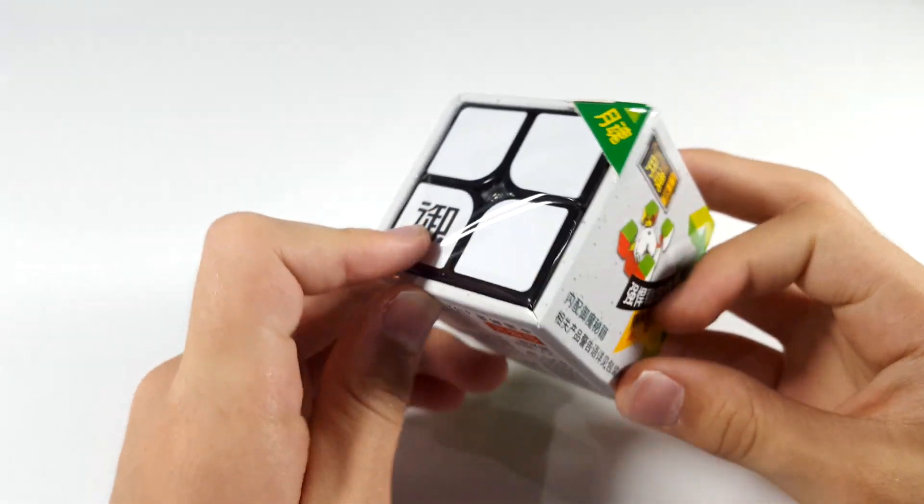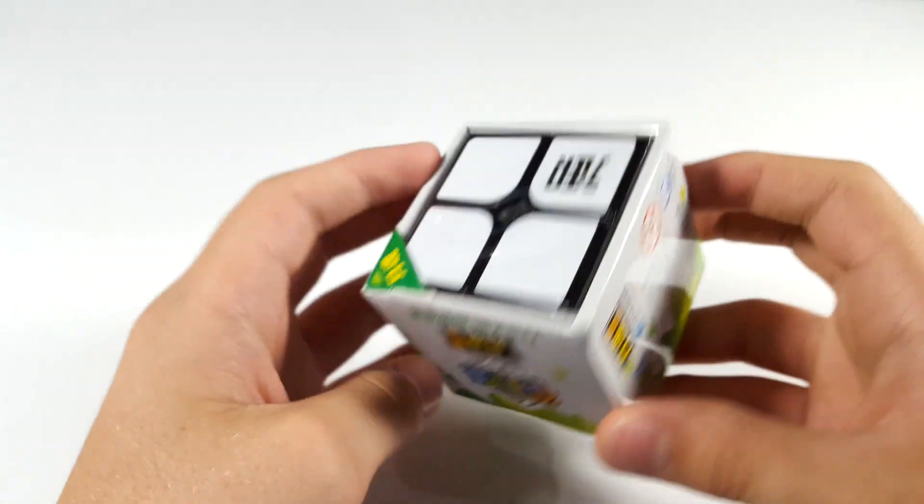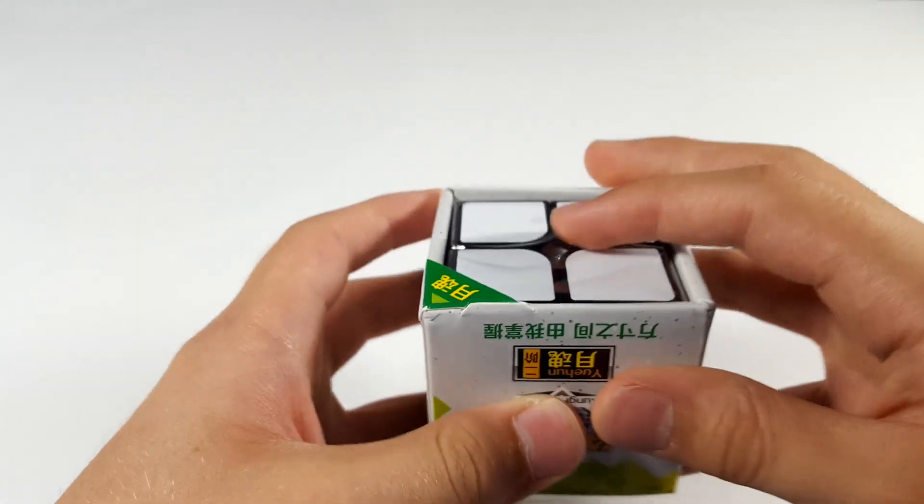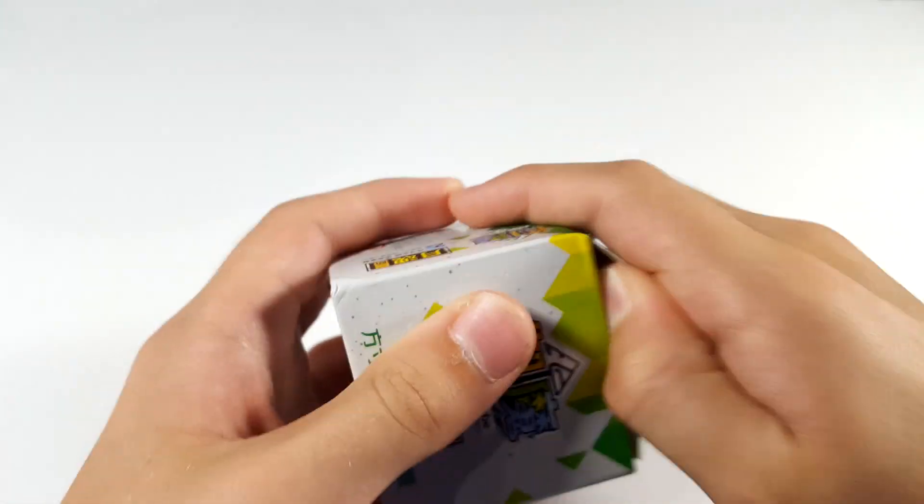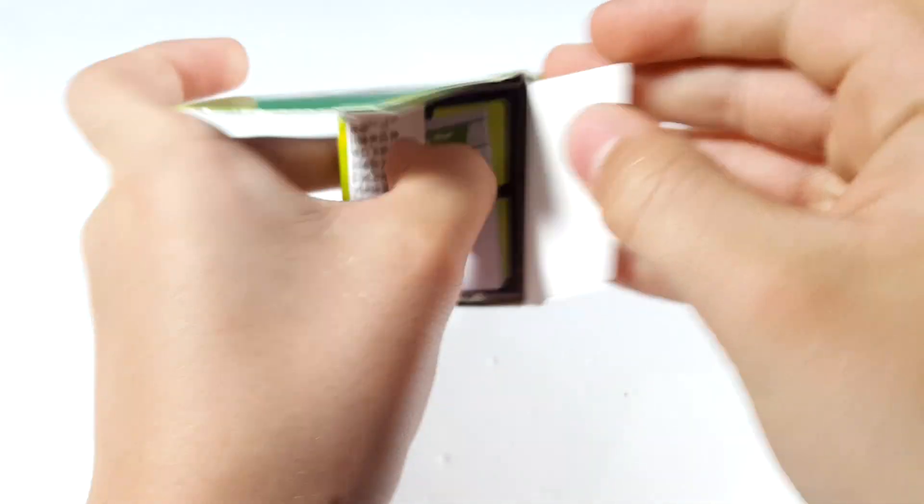Okay, so now for the more exciting stuff. Right here we have the Kung Fu 2x2, which is another really cheap 2x2. But I've heard, even from a lot of fast people, like Chris Olsen, it is actually really, really good. So, I think I can open it up like, okay, there we go. Open it up from here.